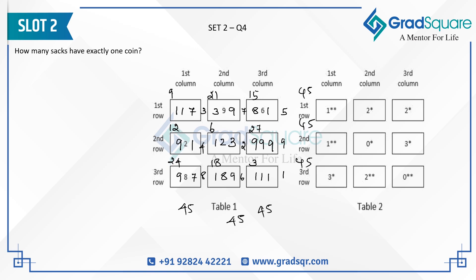The next question asks how many sacks have exactly one coin. Counting across all boxes: two sacks here, two sacks in another, one sack, two sacks, one sack, one sack, one sack, and three sacks in one box, plus one more sack. The total count of sacks with exactly one coin is nine.